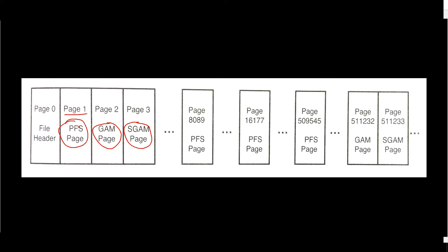We have 8,088 bytes available and a byte array, so we can cover exactly 8,088 pages. As you can see, there is one PFS page every 8,088 pages. The first one starts at page 1 and is responsible for the next 8,088 pages, then the next one starts at page 8,089 (around 8,177 range), and so on — every 8,088 pages in a database file you have a PFS page.